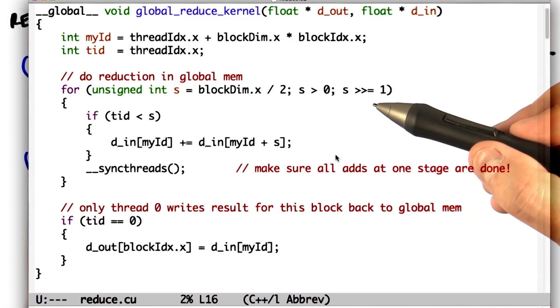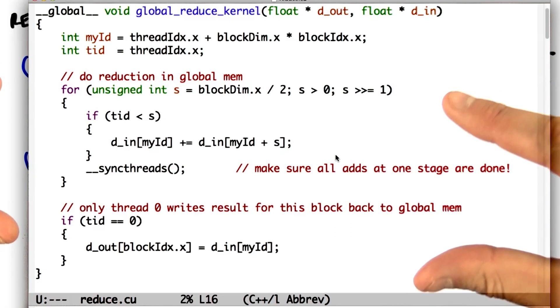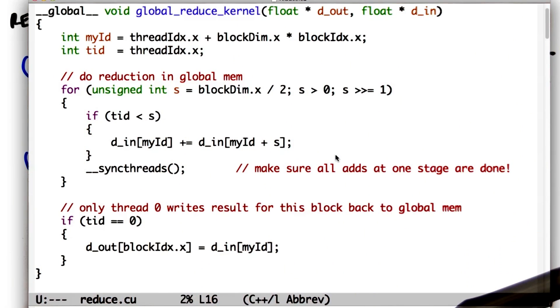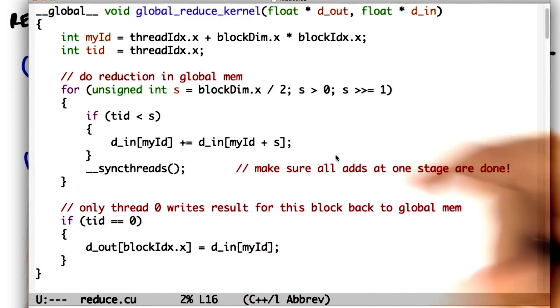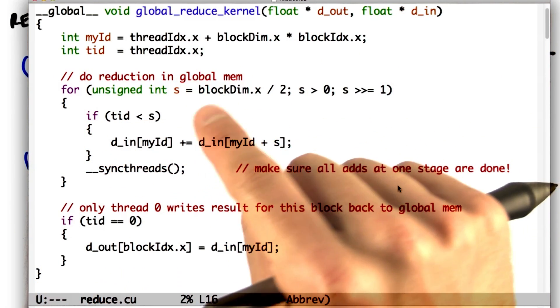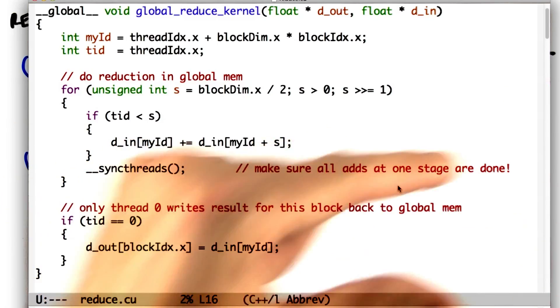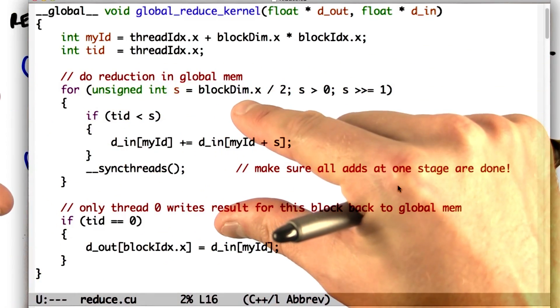On the first iteration, where we start with 1,024 elements, we'll have two 512 element regions. Then each of 512 threads will add its element in the second half to its element in the first half, writing back to the first half.